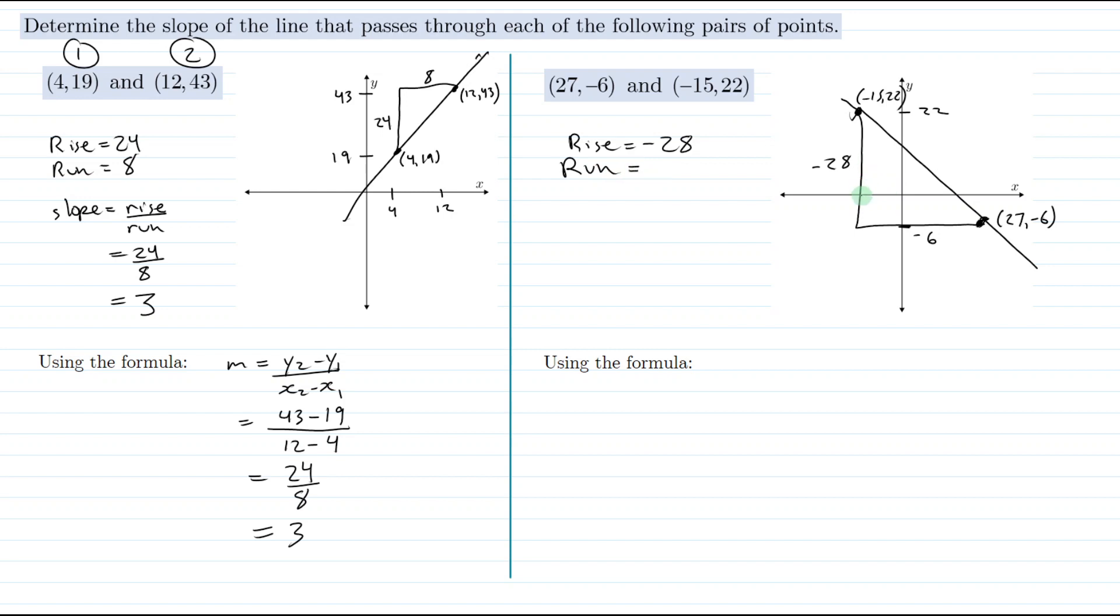Well we went from an x value of -15 for this point over to an x value of 27 for this point. So how far did we move if we went from -15 to 27? You could subtract, 27 minus -15, or you could realize that from here to here is 15 plus another 27, giving us a total of 42. So our run is 42.